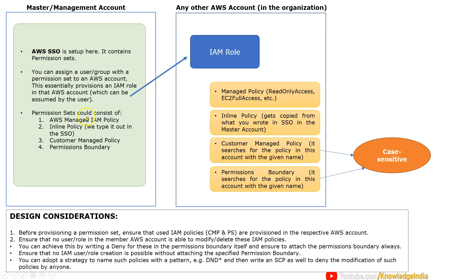Let's understand what a permission set consists of. A permission set can have: AWS managed IAM policy — for example, pre-written policies like read-only access, EC2 full access, those types of things. And then an inline policy — something which we used to type manually while creating the permission set. Earlier, only these two things were supported. Now, with this update, two additional things are also supported: we can specify the name of a customer managed policy, which we maintain as part of IAM and specify its name. Number four is permissions boundary — we can specify the name of an IAM policy which will be attached to this IAM role as a permissions boundary.